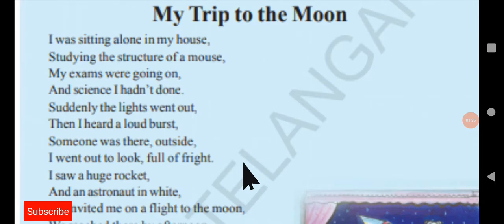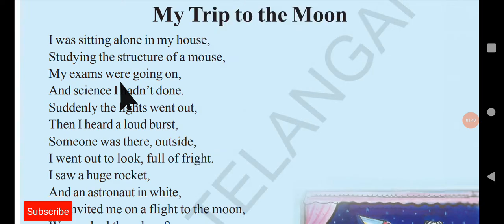'I was sitting alone in my house, studying the structure of a mouse. My exams were going on and signs I hadn't done.' The rhyming scheme of this poem is AABB — house/mouse (AA), on/done (BB). So if you come across any question about the rhyming scheme, the answer is AABB. This student is saying he was sitting alone at home, studying the structure of a mouse, while his exams were going on and he hadn't completed the subject Science.